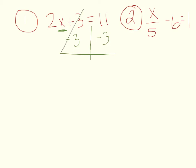And if we do that, those go away and you're left with 2x equals, and then 11 minus 3 is 8. Now you can see that x is still not by itself, so to get rid of the 2, since they're multiplying, opposite of multiplying is dividing by 2, so you get x equals 4. And that's your answer.